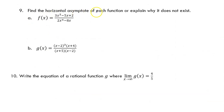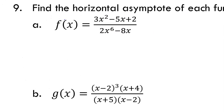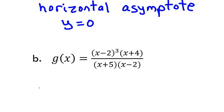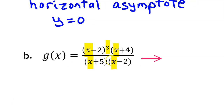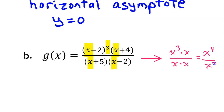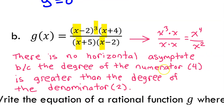Number 9: find the horizontal asymptote of each function or explain why it does not exist. For part a, the degree of the denominator is bigger, so the horizontal asymptote is going to be y equals 0. For part b, it's in our best interest to find the leading term of the numerator and the denominator. Focusing on the leading term of each factor and not forgetting the exponent, g of x will be approaching x to the third power times x over x times x, which is x to the fourth power over x squared. There is no horizontal asymptote because the degree of the numerator, which is four, is greater than the degree of the denominator, which is two.